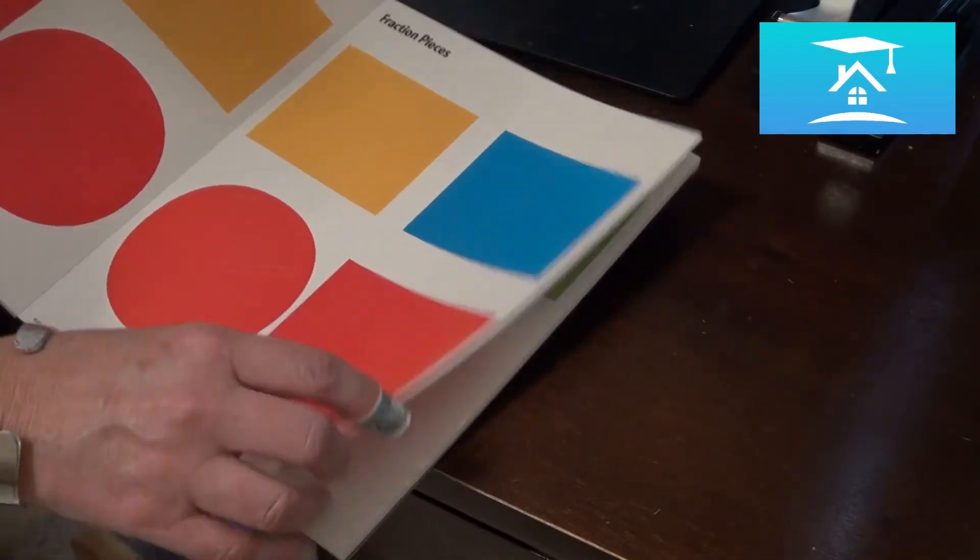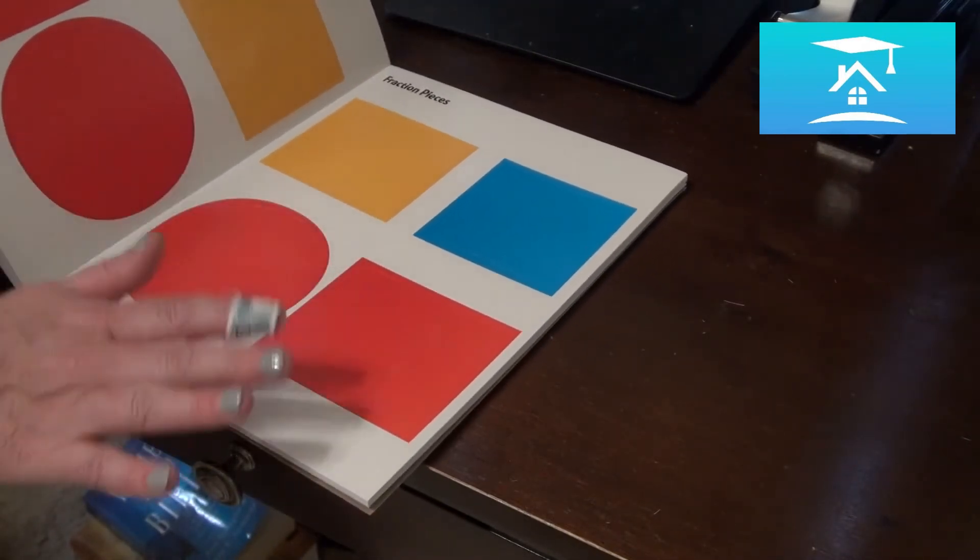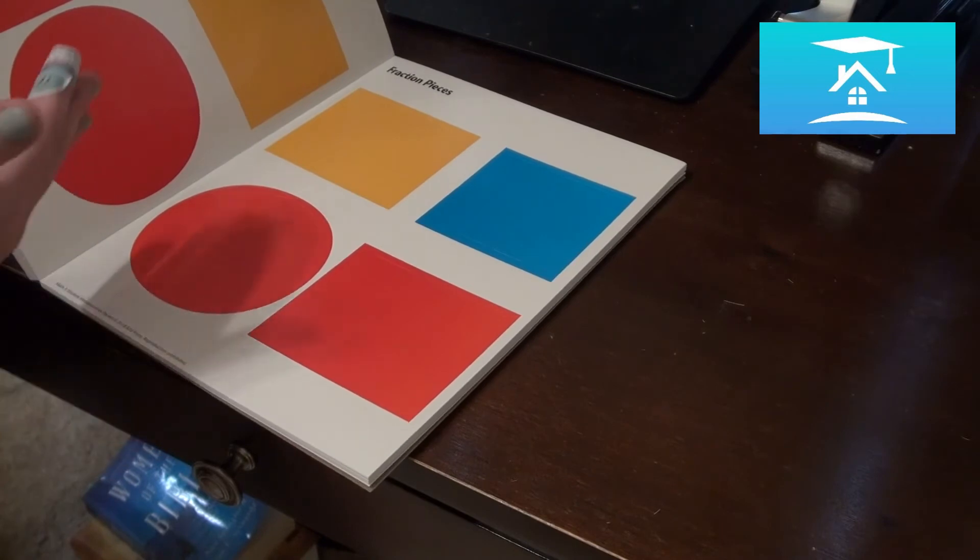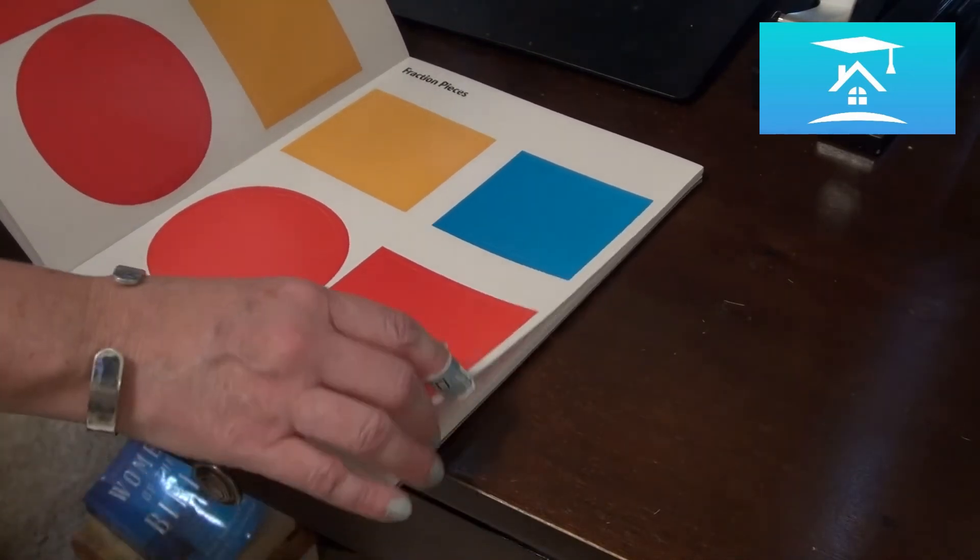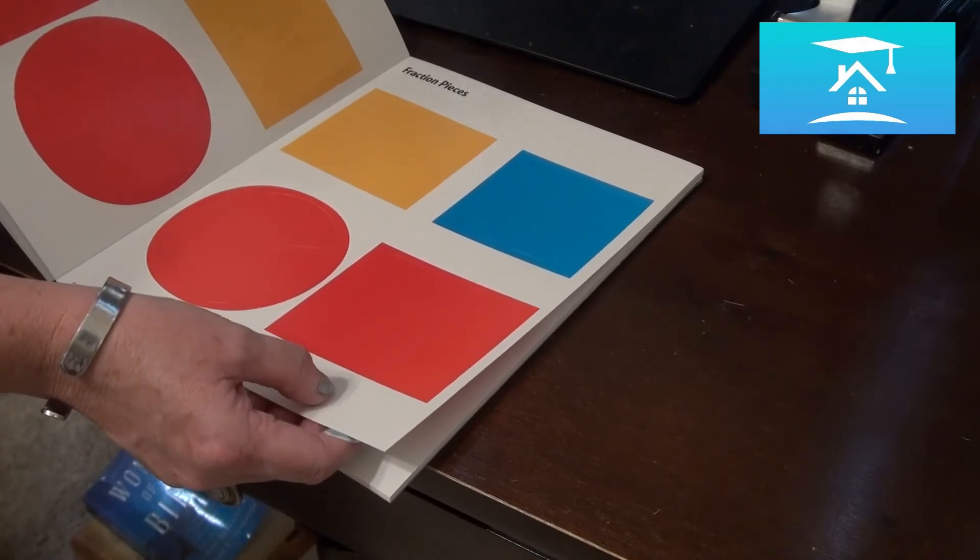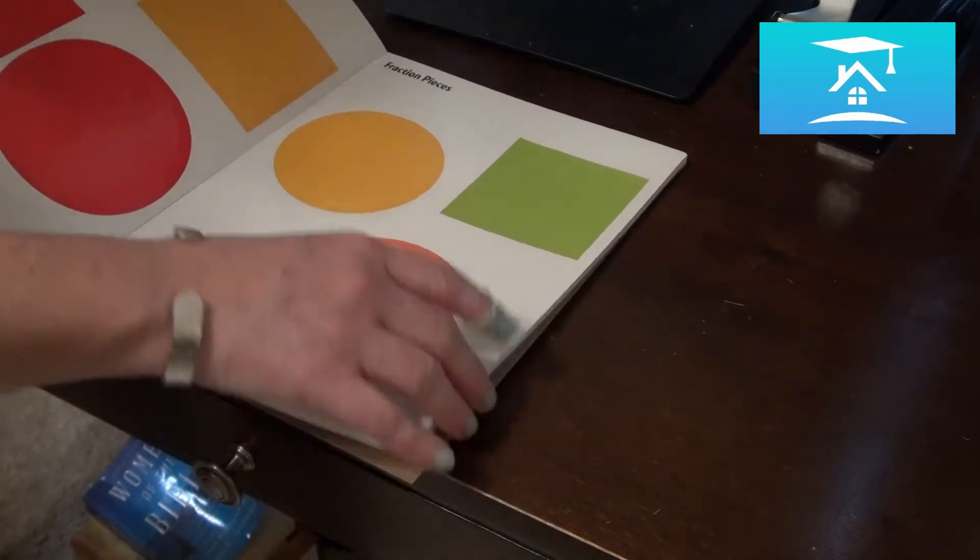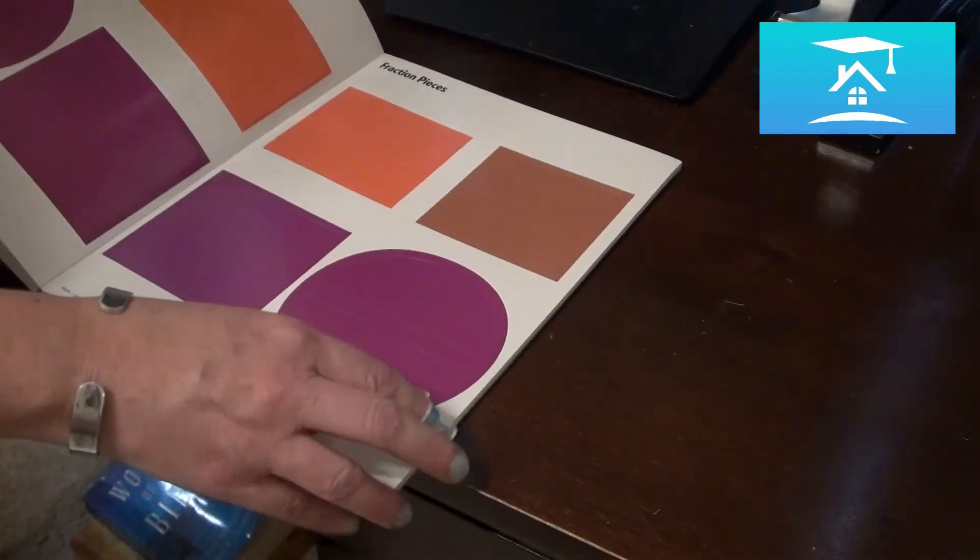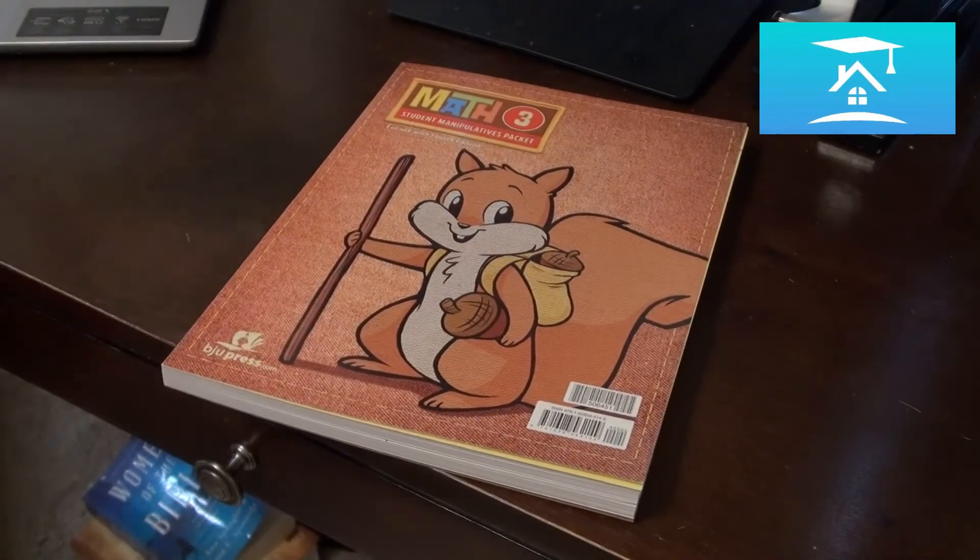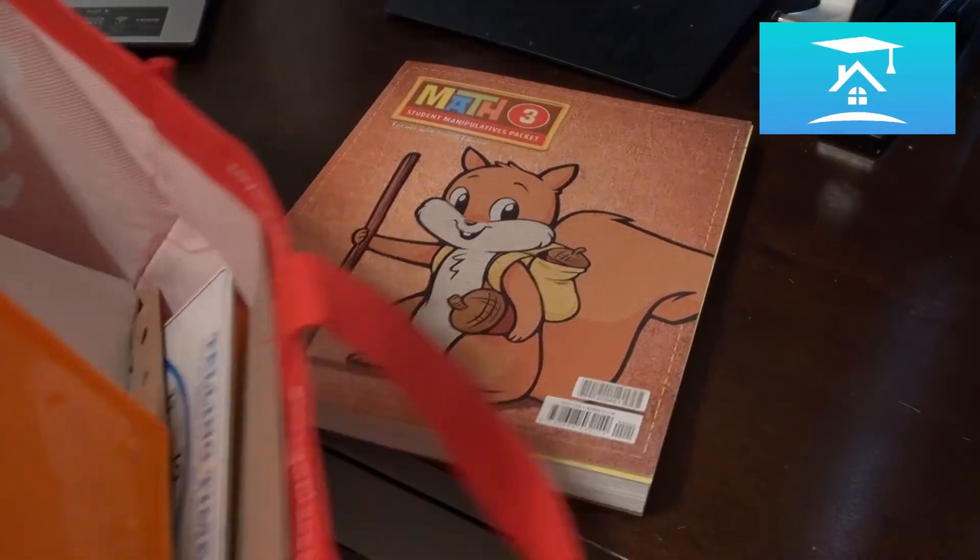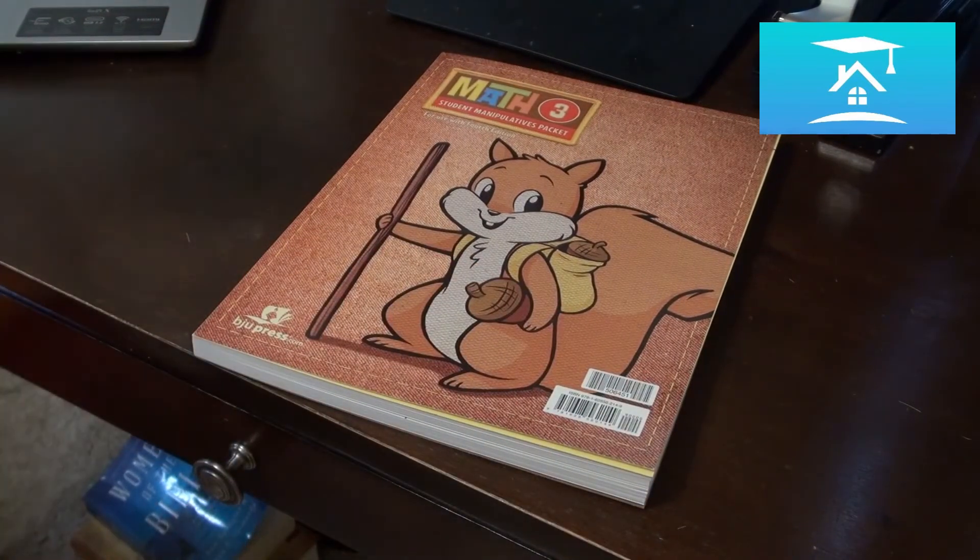We've got fraction pieces here. This is something that in Saxon we would have to, they would probably tell us the night before. Get your lesson out and go ahead and cut out all these things and do all of these things and have it ready the next day. And quite frankly, when you're teaching several subjects, you don't always have time to do that next step. So it is kind of nice to have it already done for you. Okay, so that just gives you a little bit of an idea of the difference between what the manipulatives packet, or I should say in our case, the manipulatives bag looks like in our house and what the manipulatives are.